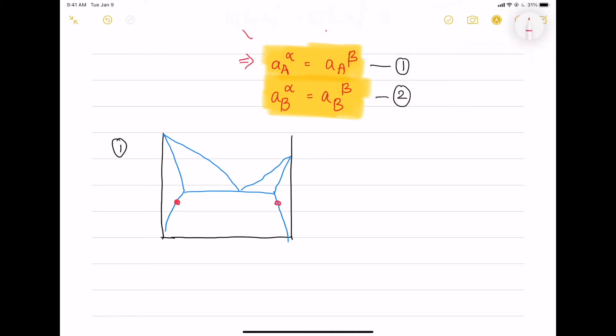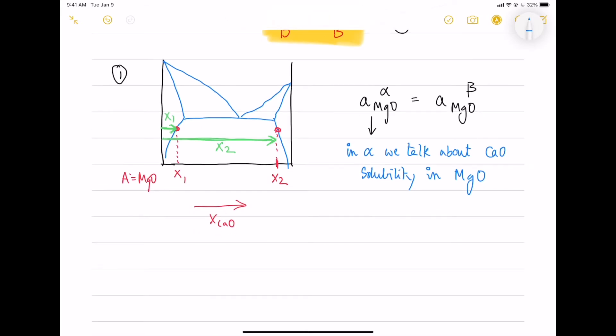So let's take the first equation, and for component A MgO, we have X1 and X2. X1 is the maximum solubility in alpha and X2 is the maximum solubility of MgO in calcium oxide. Also, we know that activity can be written as omega into mole fraction.